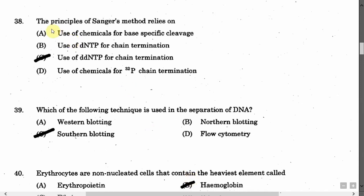The next question is: The principle of Sanger's method relies on — Option A: Use of chemicals for base-specific cleavage. Option B: Use of ddNTPs for chain termination. Option C: Use of ddNTPs for chain termination. Option D: Use of chemicals for P-32 chain termination. The correct answer is Option C, use of ddNTPs for chain termination.